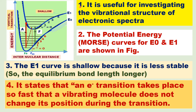The Frank-Condon principle is useful for investigating the vibrational electronic transition. The potential energy Morse curves for E0 and E1 are shown in the figure. The E1 Morse curve for the first excited electronic state is shallow because it is less stable, and also the equilibrium bond length is greater than that of the ground state.